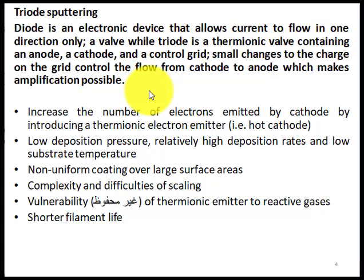In triode sputtering, the number of electrons emitted by the cathode is increased by introducing a thermionic electron emitter — that is, a hot cathode. The grid in this system is the hot cathode. Triode sputtering uses a low deposition pressure and gives a relatively high deposition rate and low substrate temperature. It also gives non-uniform coating over large surface areas, has complexity and difficulty of scaling, and vulnerability of the thermionic filament to reactive gases, giving it a shorter filament life.